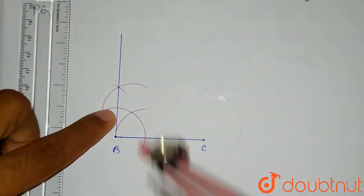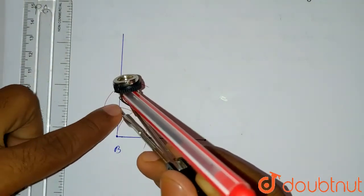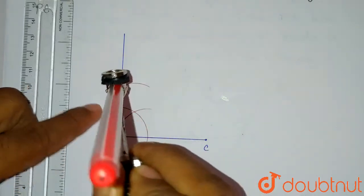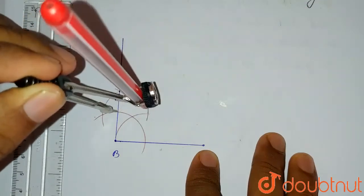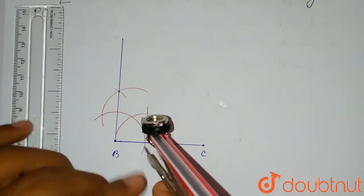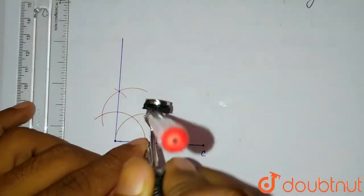Now from this intersecting point, we have to draw another arc with the same measurement, same length. From here we will draw another arc which will be this one. And it is intersecting the previous arc at this point.